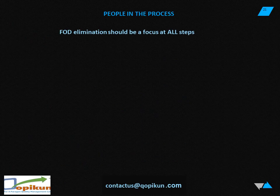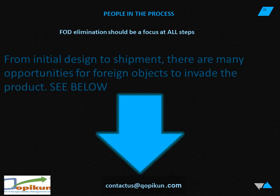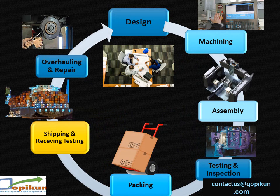People in the process: FOD elimination should be a focus at all steps. From initial design to shipment, there are many opportunities for foreign objects to invade the product. The process cycle is: design, machining, assembly, testing and inspection, packing, shipping and receiving, and if needed, overhauling and repair. Any problems found in design are corrected and the cycle continues.